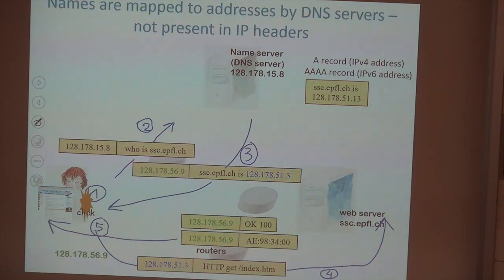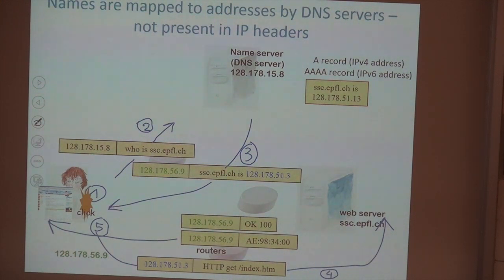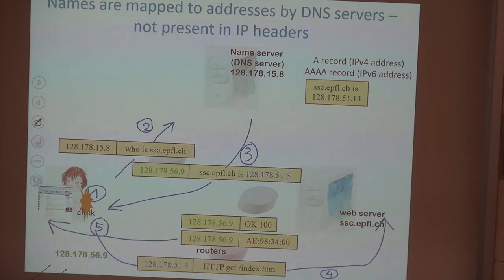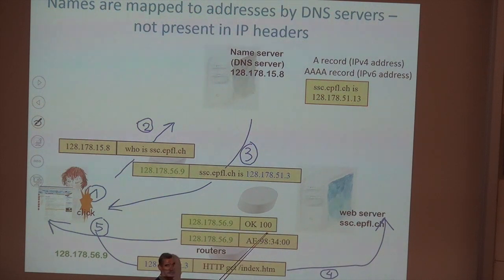This is called a mapping function — the same as for postal service in North America, where you need to find the zip code. On the internet we have a directory service. How does the web server know the IP address of my machine? It's in the header — the return address. When this machine sends a packet, there is the destination address used by all routers to know where to send the packet, but there's also the source address which will be learned by the server. So servers don't need to look up DNS to know where to send answers.